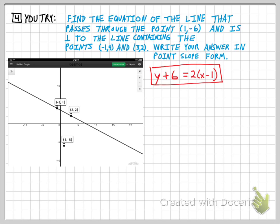All right, hopefully you got y plus 6 equals 2 times the quantity x minus 1. A lot of small steps in this problem, but step 1 is I've got to figure out the slope of the line given, and I've got to use my slope formula to figure that out.